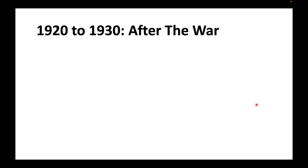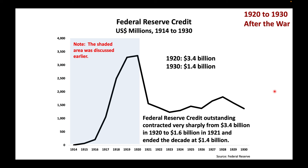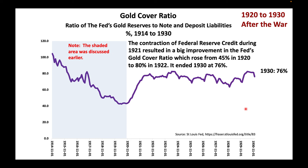After the war, when it ended, much of the credit the Fed had created during the war was repaid in 1921. Afterward, there were only relatively small fluctuations in Federal Reserve credit during the rest of the decade, and the Fed once again functioned as it was originally designed to. Federal Reserve credit outstanding contracted very sharply from $3.4 billion in 1920 to $1.6 billion in 1921 and ended the decade at $1.4 billion. The contraction of Federal Reserve credit during 1921 resulted in a big improvement in the Fed's gold cover ratio, which rose from 45% in 1920 to 80% in 1922. It ended 1930 at 76%.